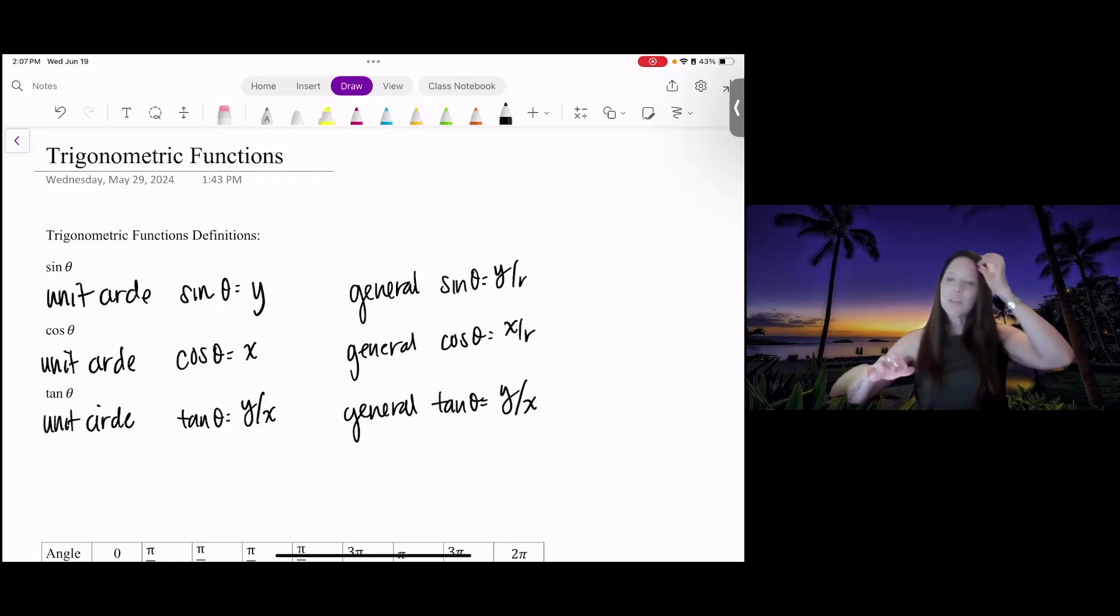In general, if it's not just a circle of radius 1, sine is y over the radius value, cosine is x over the radius value, and tangent is y over x as well. It doesn't matter if it's a unit circle, the tangent doesn't change.